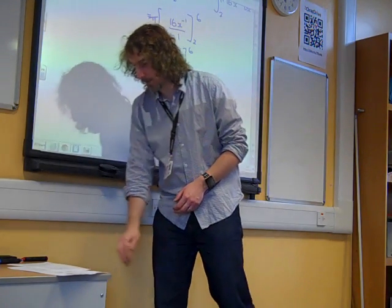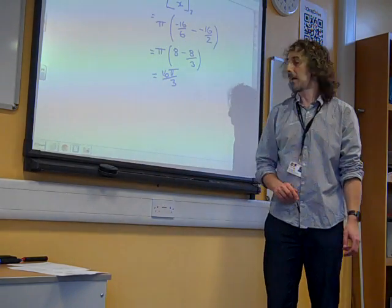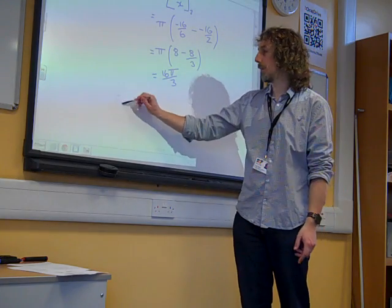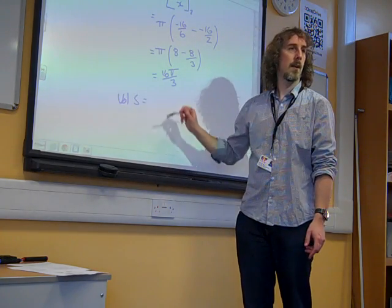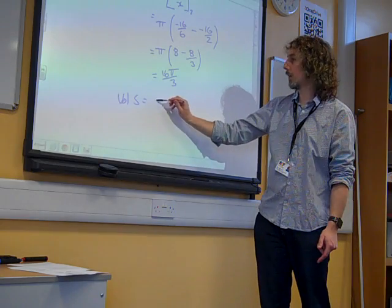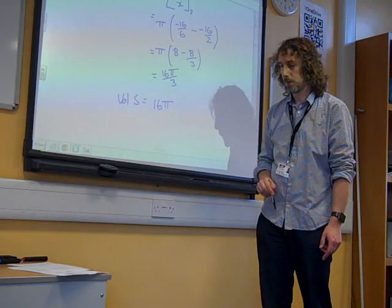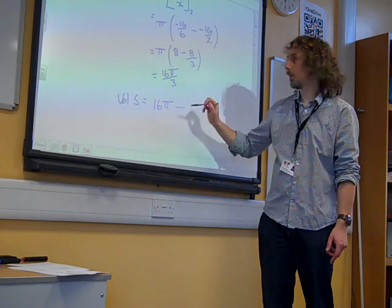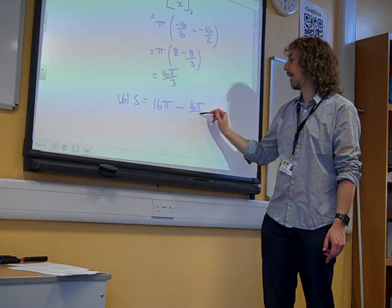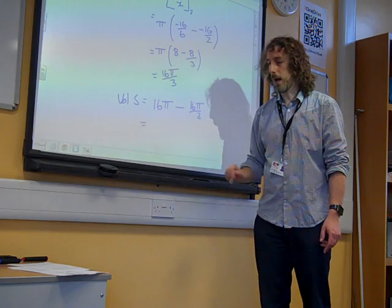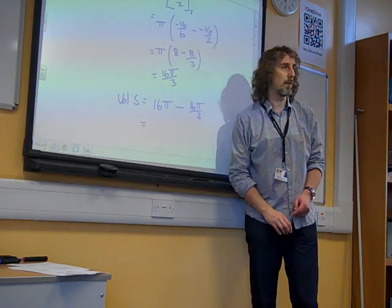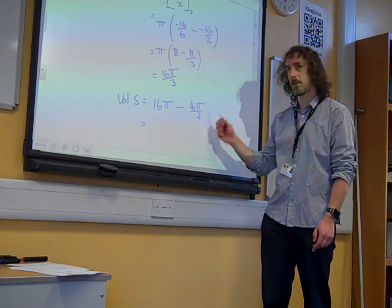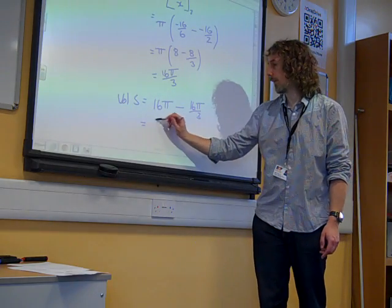Now, we already said what we were going to do here. Our final volume. The volume that we're after of S is then the cylinder volume, which was 16 pi, take away the volume of the bit that we're removing, which was 16 pi over 3. And again, your calculator will sort that out for you, but 16 is 48 thirds, isn't it? So, 48 takes 16. It's 32 pi over 3.